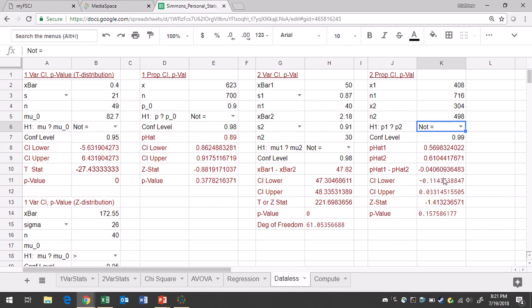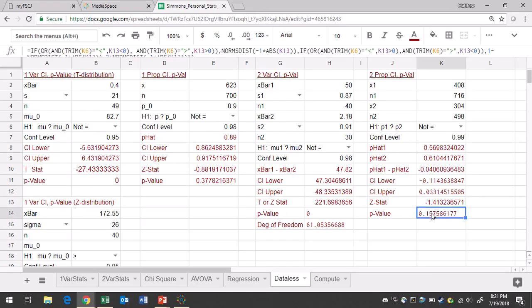So you have all this information here, but all you really care about when you do a hypothesis test would be the test statistic and the p-value. So the test statistic in two decimal places is negative 1.41. The p-value is about 0.1576.